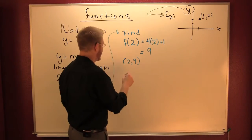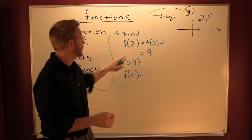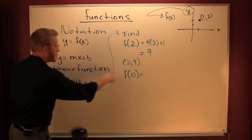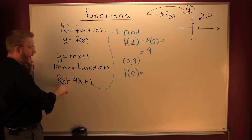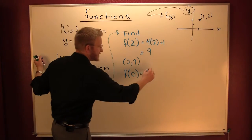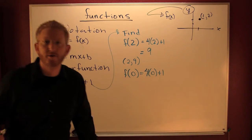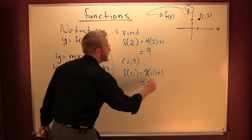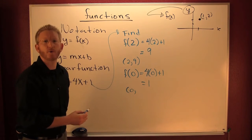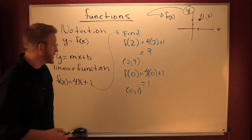Let's do more. F of zero. I'm going to throw a zero in where that X is. I'm still using this function — F of X. We're putting in zero for X values and we're going to get out a Y value. This is four times zero plus one. That's zero plus one, which equals one. So my X was zero and my Y is one. Great — there's another point. Let me check one more point.